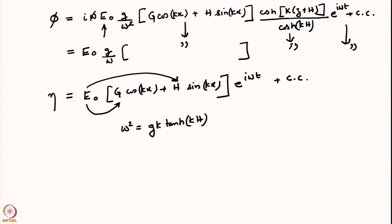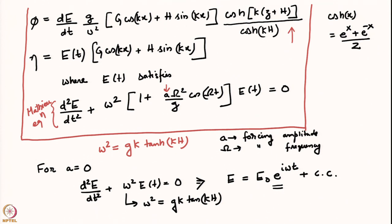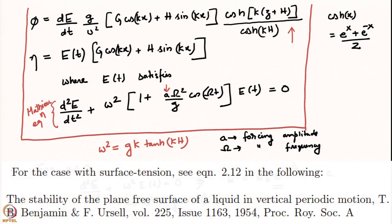I encourage you to try the derivation of the Faraday wave problem with surface tension included, because it also has applications — particularly in drug delivery where device dimensions are very small. The Faraday waves created are mostly capillary waves and gravity plays a very small role. You will find you get exactly the same Mathieu equation, except that the dispersion relation becomes ω² = (gk + Tk³) tanh(kh). It is just a modified ω², the equation remains the same.